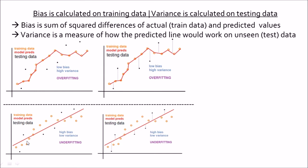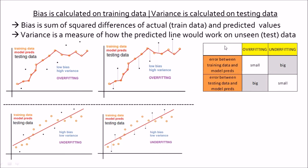For overfitting, the error between the training data and the model predictions is small, but the error between the testing data and the predictions is huge. It is the reverse for underfitting — the error on training is large because the prediction line is not quite fitting the training data, but variance is low. So underfitting has high bias and low variance.